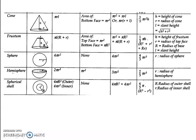Volume of the cone is (1/3)πR²H. The frustum of a cone is a deleted topic from this chapter for the current academic year.